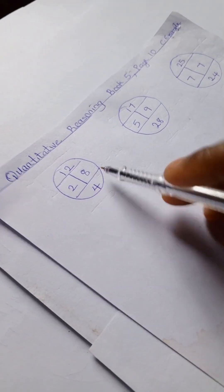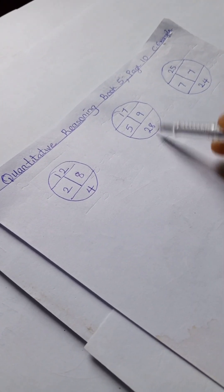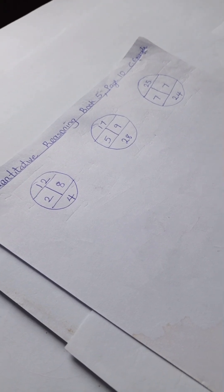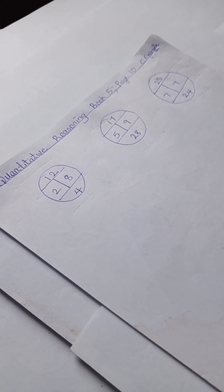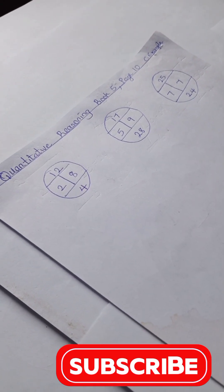Here we have 17, 5, 9, 28. And here we have 25, 7, 7, and 24. If you're joining us for the first time, please do well to like and subscribe to this channel for more quantitative reasoning solutions and problems.